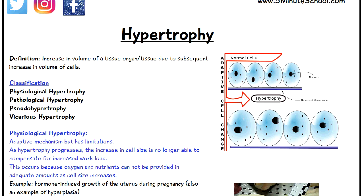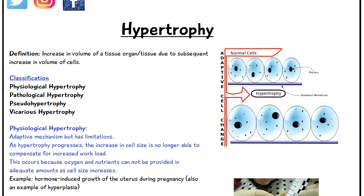An example of physiological hypertrophy is the hormone-induced growth of the uterus during pregnancy, and that's also an example of hyperplasia, which I've also made a video about.